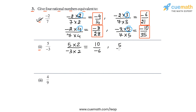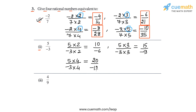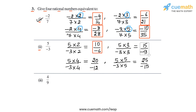Then we multiply both numerator and denominator by three, so this will give us 15 by minus nine. Then we take five by minus three and multiply both numerator and denominator by four, so this will give us 20 by minus 12. And finally, let's multiply with the multiplier five, and this will give us 25 by minus 15. So the four equivalent rational numbers we have obtained for five by minus three are 10 by minus six, 15 by minus nine, 20 by minus 12, and 25 by minus 15. This completes part two.